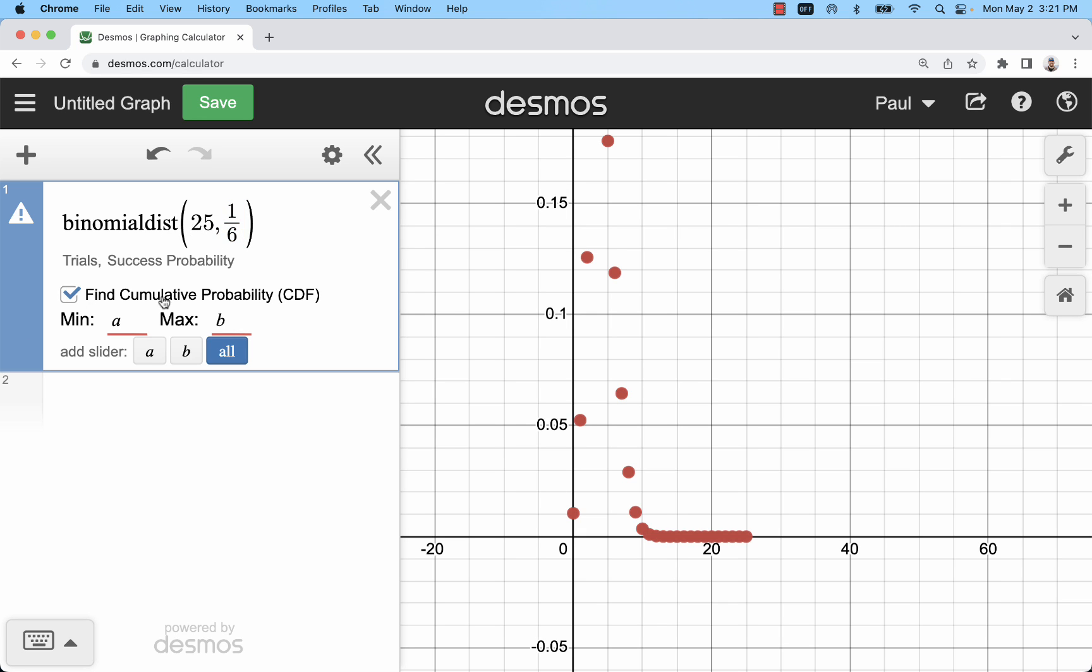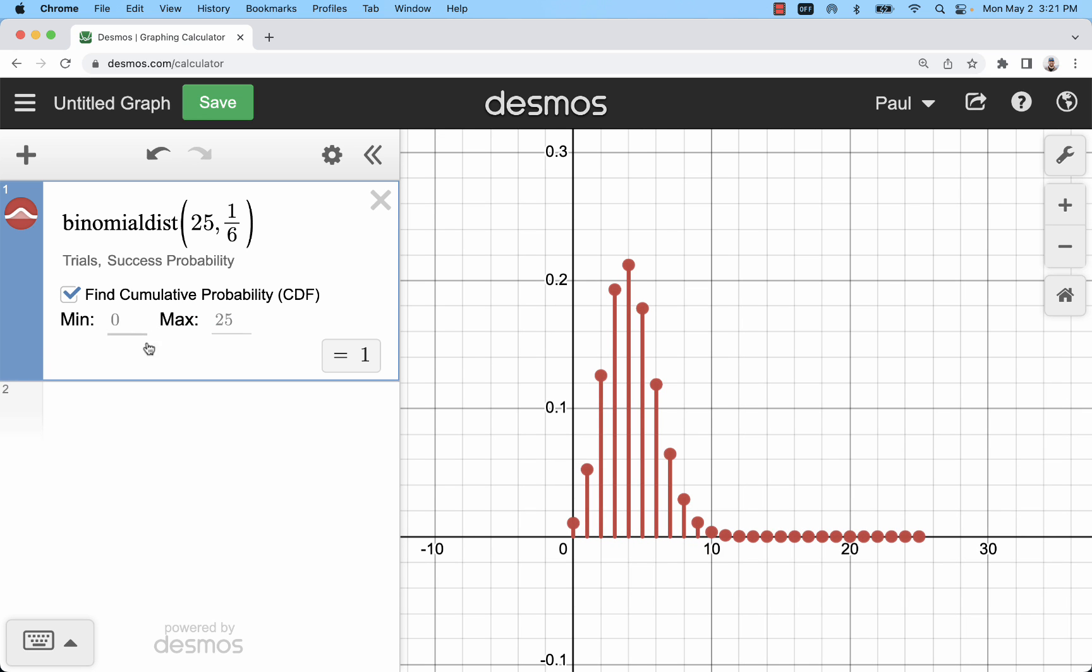I have 25 rolls, and let me remove my a and b. Now I can see that whole graph. Let's say I'm looking at the probability of rolling somewhere between 2 and 10 threes. That would be about 93, 94%.